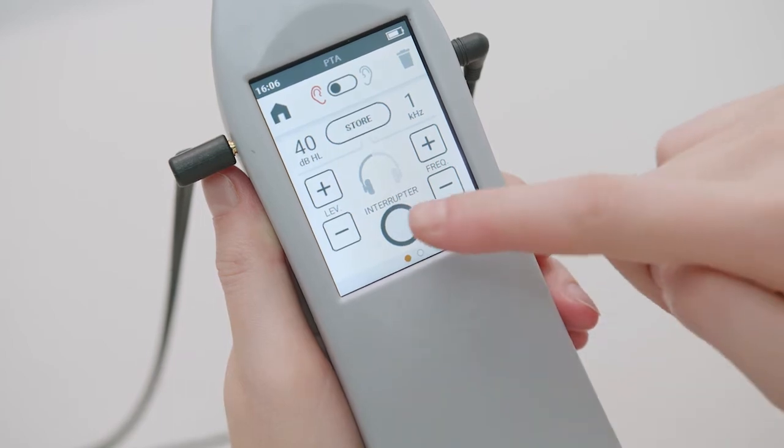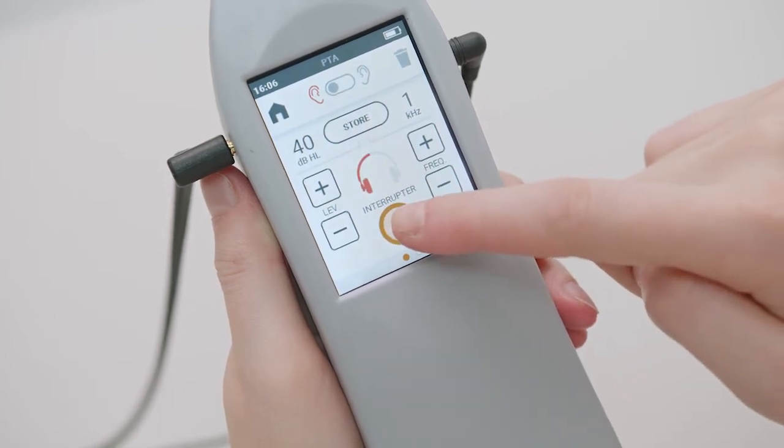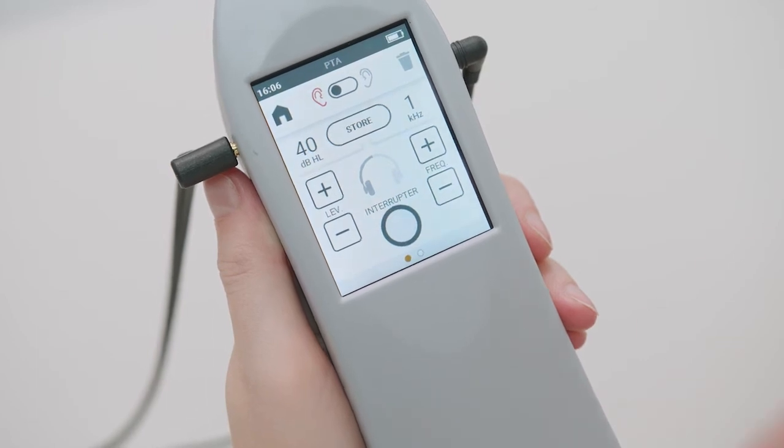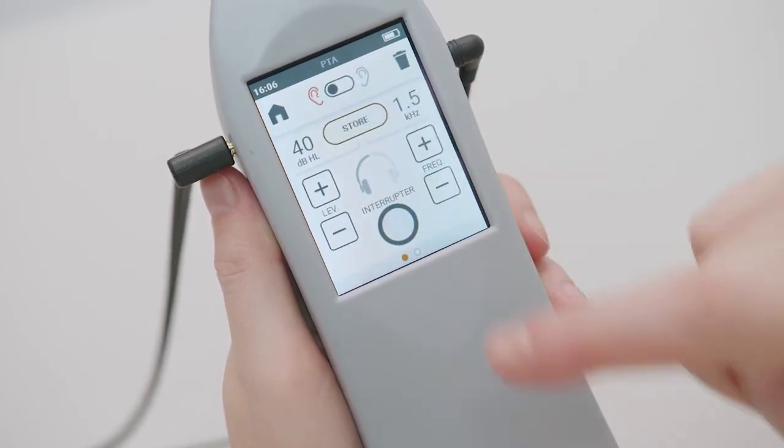The transducer icon shows in red or blue when the stimulus is actually transmitted. Using the store button you can save the current level as an auditory threshold for the frequency under investigation.